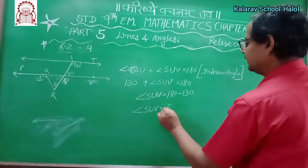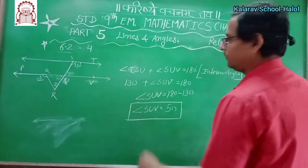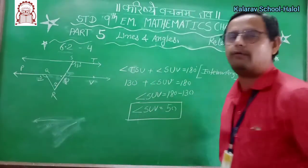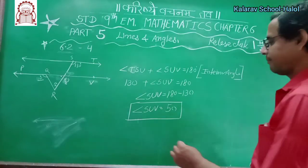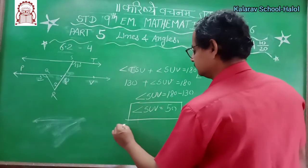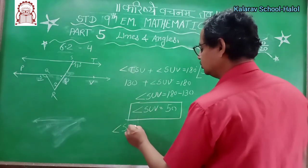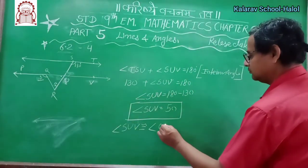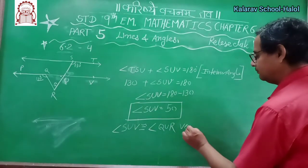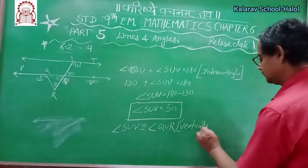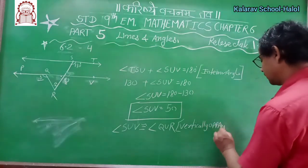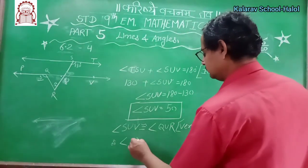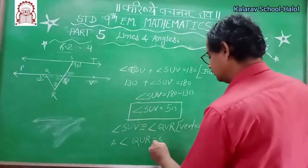TSU is 130 degrees, so 130 plus angle SUV equals 180. Therefore angle SUV equals 180 minus 130, so angle SUV equals 50 degrees. Since SUV is 50 degrees, then angle QUR also equals 50 degrees — vertically opposite angles are congruent. So angle SUV is congruent to angle QUR. Therefore angle QUR equals 50 degrees.